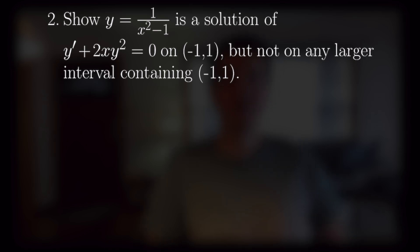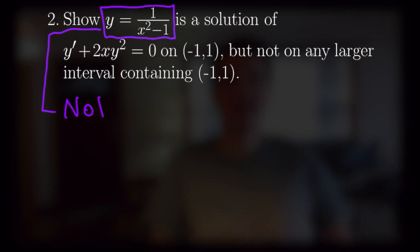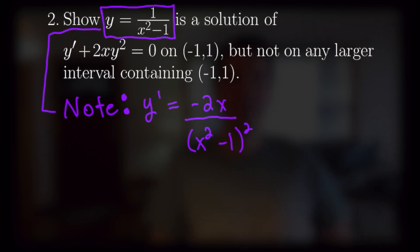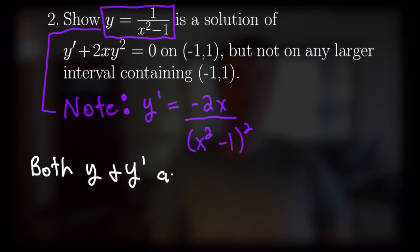For the second problem, we're going to want to show that y equals 1 over x squared minus 1 is a solution of y prime plus 2x squared equals 0 on the open interval negative 1 to 1, but not on any larger interval containing negative 1 to 1. We'll begin by noting that the derivative of this y, boxed in purple, is equal to negative 2x over (x squared minus 1) quantity squared. We observe that both y and y prime are well defined on negative 1 to 1.